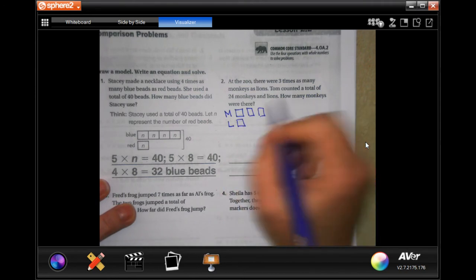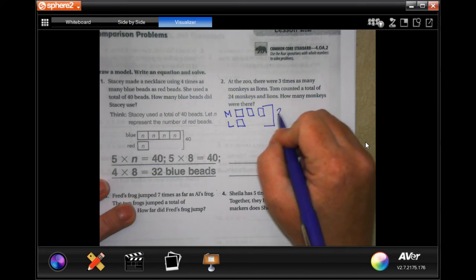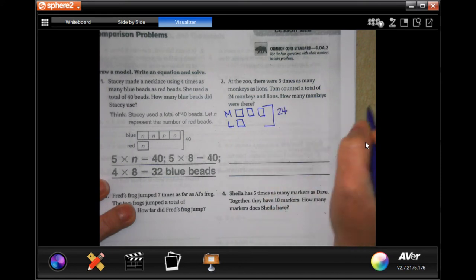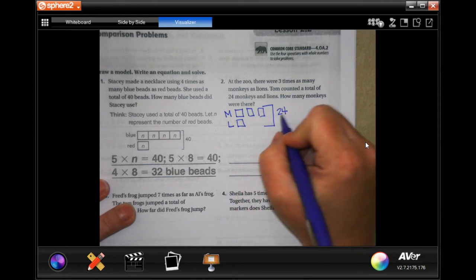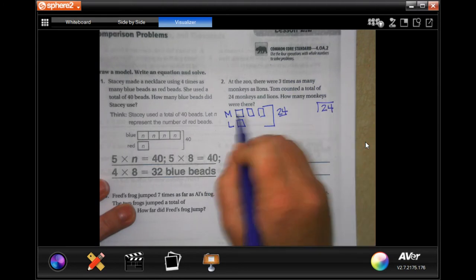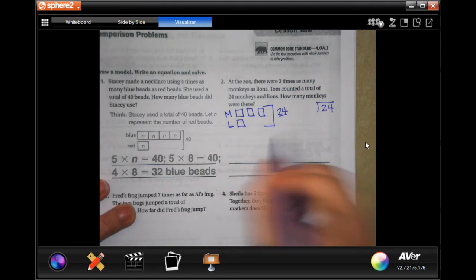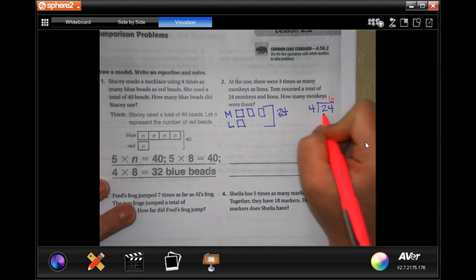Tom counted a total of 24 monkeys and lions. These drawings are helpful because it means that we take the total number and we divide it by the number of boxes. I'm going to divide it by four. Now I know that four goes into 24 six times, four none left over, we're good.